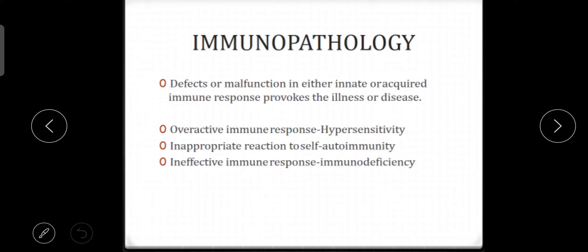When there is an overactive immune response, we call it hypersensitivity. When there is an inappropriate reaction to self, it is called autoimmunity. And when there is an ineffective immune response, it is called immunodeficiency. So these three terms are different: hypersensitivity means overactive, autoimmunity means inappropriate reaction, and immunodeficiency means ineffective immune response.